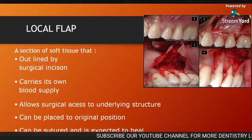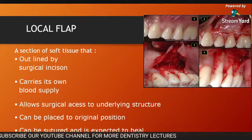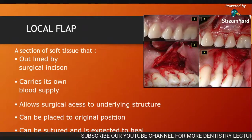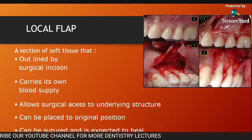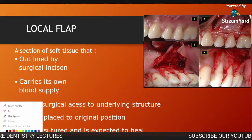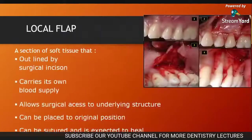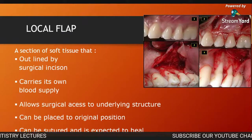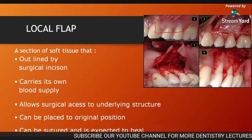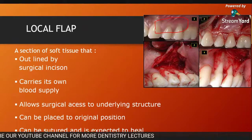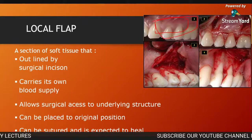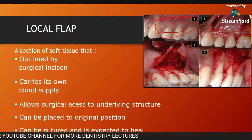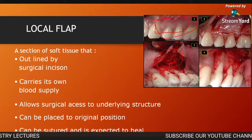In the clinical picture, we have to raise different types of flaps. Basically, a flap is a section of soft tissue over the gingiva. This section of soft tissue present over the gingiva — you have to surgically incise this portion and raise it with the help of a periosteal elevator. The flap is a section of soft tissue outlined by the surgical incision, and it carries its own blood vessels, as you can see blood accumulated here.